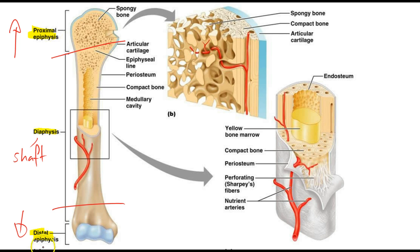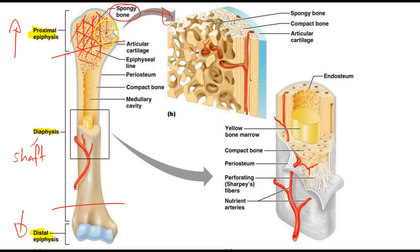Our proximal and distal epiphysis is made up of spongy bone, sometimes also referred to as cancellous tissue. Here we have our honeycomb structure, with lots of criss-crossing multi-directional fibers with a lot of space in between them. This makes it firstly very strong because the fibers run in opposite and varied directions, but it also makes it light because of the amount of space that there is.